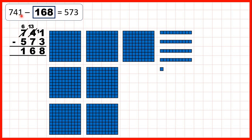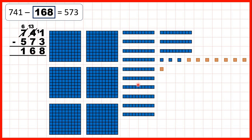Then we had 741 minus something equals 573. Here we've shown 741, because we have 7 hundreds, 4 tens, and 1 one. If we exchange 1 of our tens for 10 ones, we can colour in 8 of those ones. Then we can colour in 6 tens if we first exchange 1 of our hundreds for 10 tens, and we can colour in 1 hundred. So that's 168 coloured in red. Notice, if we take away what's in red, we're left with 573 — because in blue we have 5 hundreds, 7 tens, and 3 ones. So our missing number is 168.